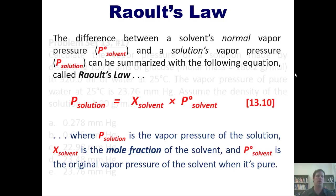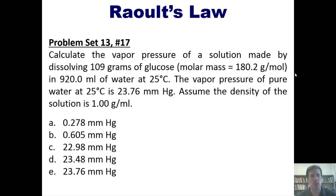Let's take a look, then, at a Raoult's Law problem. Calculate the vapor pressure of a solution made by dissolving 109 grams of glucose, whose mass is right there, in 920 milliliters of water at 25 degrees Celsius. The vapor pressure of pure water happens to be this. Assume the density of the solution is one gram per mil. I'm not going to answer that for you here, but we'll post a link to a separate video, in which I do, that you're welcome to check out if you like.